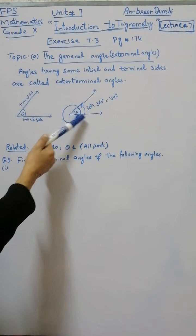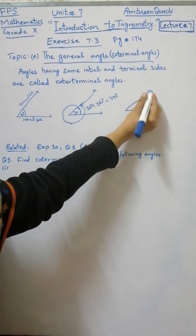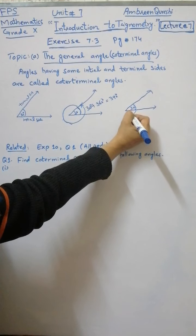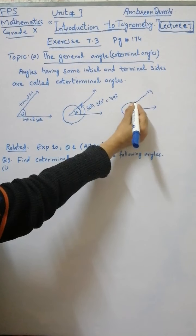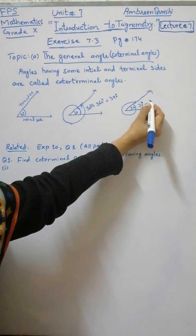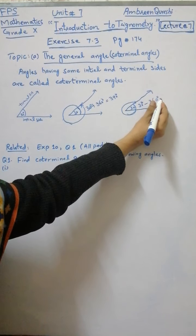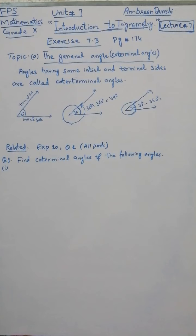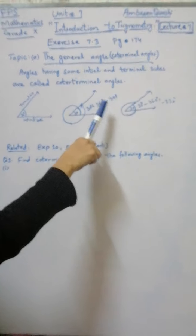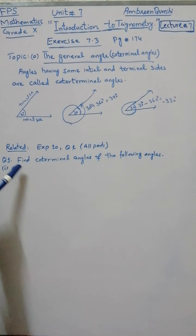When you have the terminal side, this will be positive. Now, below the axis, you have 30 degrees. This will be a complete rotation, so this will be minus 360 degrees. And when you have minus 360 degrees, this will be minus 330 degrees. So we have two co-terminal angles: one is 390 and one is minus 330 degrees.